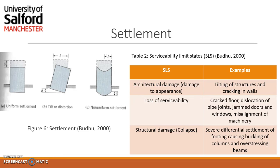Foundation settlement can be divided into three basic types: rigid block or uniform settlement, shown in Figure 6A; tilt or distortion, shown in Figure 6B; and non-uniform settlement, shown in Figure 6C. Most damage from uniform settlement is limited to surrounding systems, attached buildings, or utilities. Distortion and non-uniform settlement are caused by differential movement and may cause serious problems, especially in tall buildings. Distortion produces bending, which causes most cracking in structures.